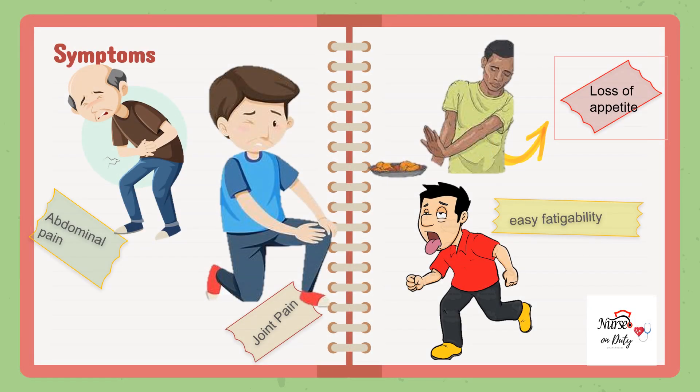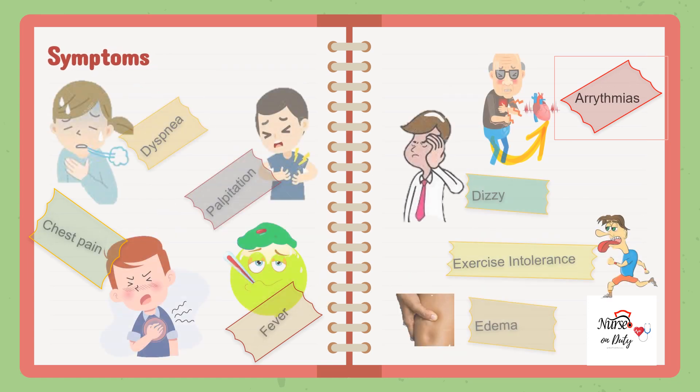How about the symptoms? Abdominal pain, joint pain, loss of appetite because of the presence of abdominal distension. The early sign of easy fatigability because of lacking oxygen and nutrients in the tissues and cells. Next is dyspnea or difficulty in breathing — the description of the patient is the feeling of not being able to breathe well enough because of insufficient oxygen supply into the circulatory system.